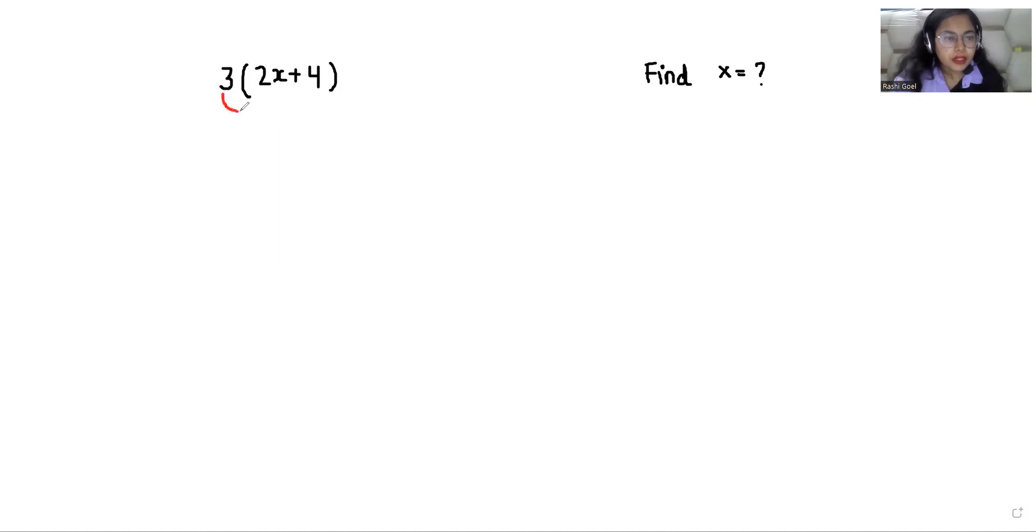First we multiplied 3 with 2x and after that 3 with 4. Now 3 times 2x is 6x, plus 3 times 4 equals to 12. So this must be equals to 0.